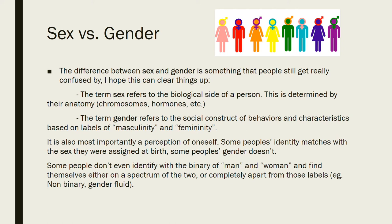Sex and gender — those are two terms that cause a lot of confusion, but it's very important to know what the difference is if you're going to learn about the LGBTQIA+ community. The term sex refers to the biological side of a person. Someone's sex is determined by their anatomy, chromosomes, hormones, etc. The term gender refers to the social construct of behaviors and characteristics based on the labels of masculinity and femininity. So basically, gender is very much a perception of oneself — it's an identity thing, it's how you feel.